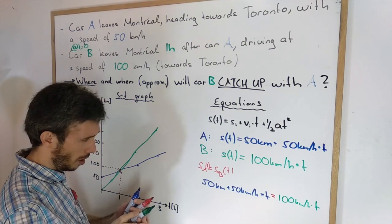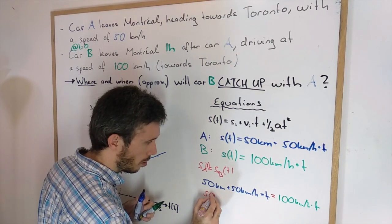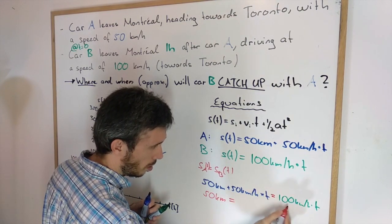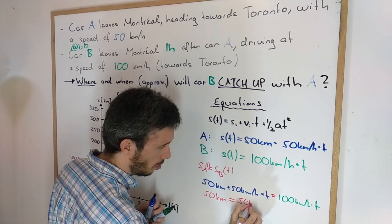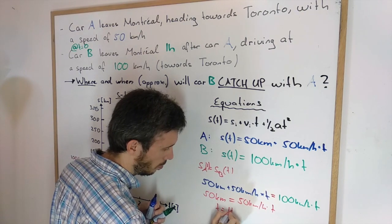And I'm solving for time, so I have 50 km equals 50 km per hour times time. So I get that time is 1 hour.